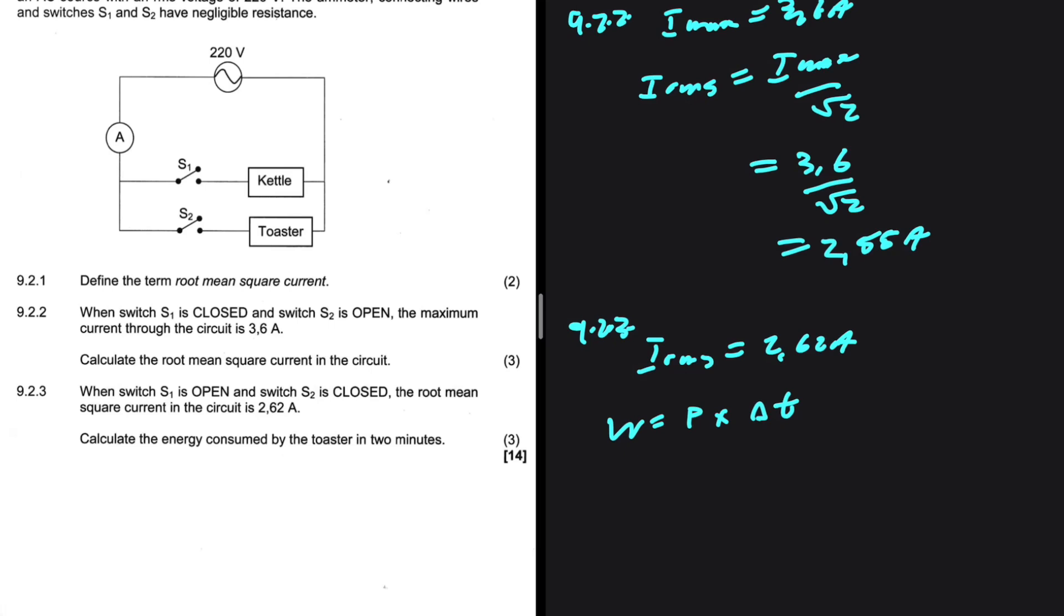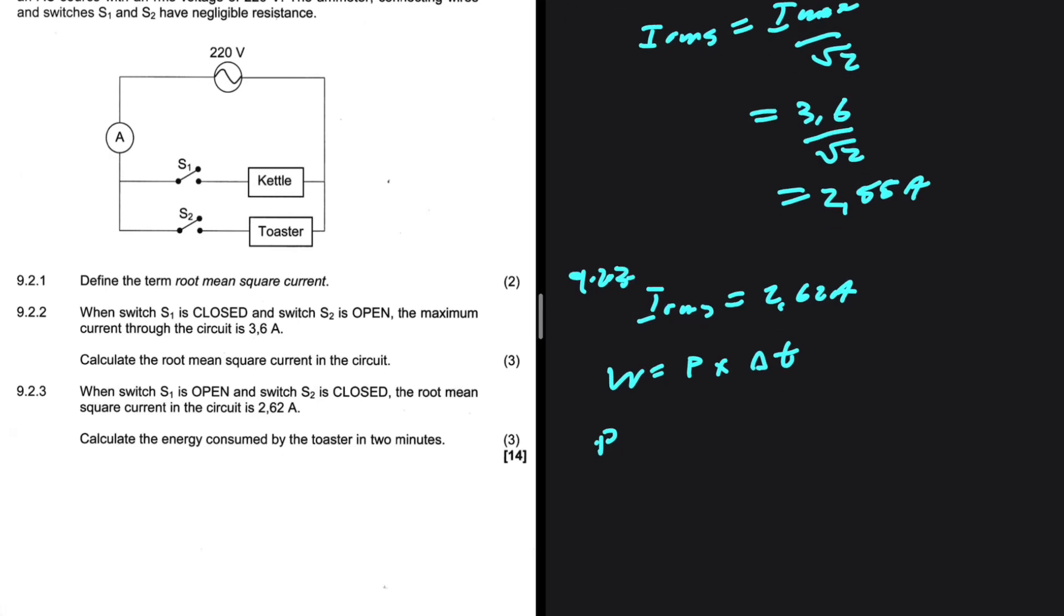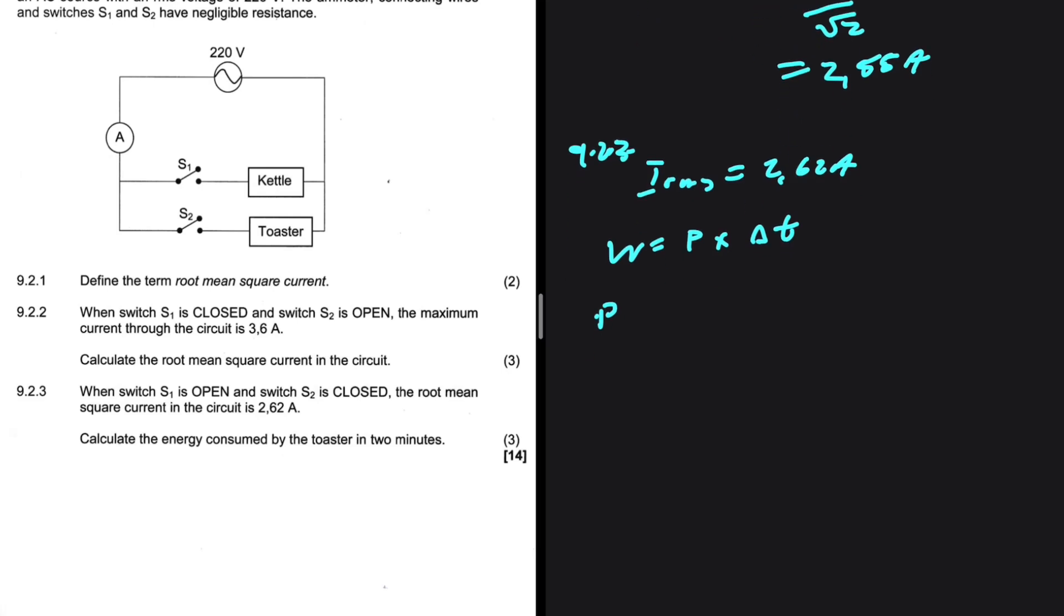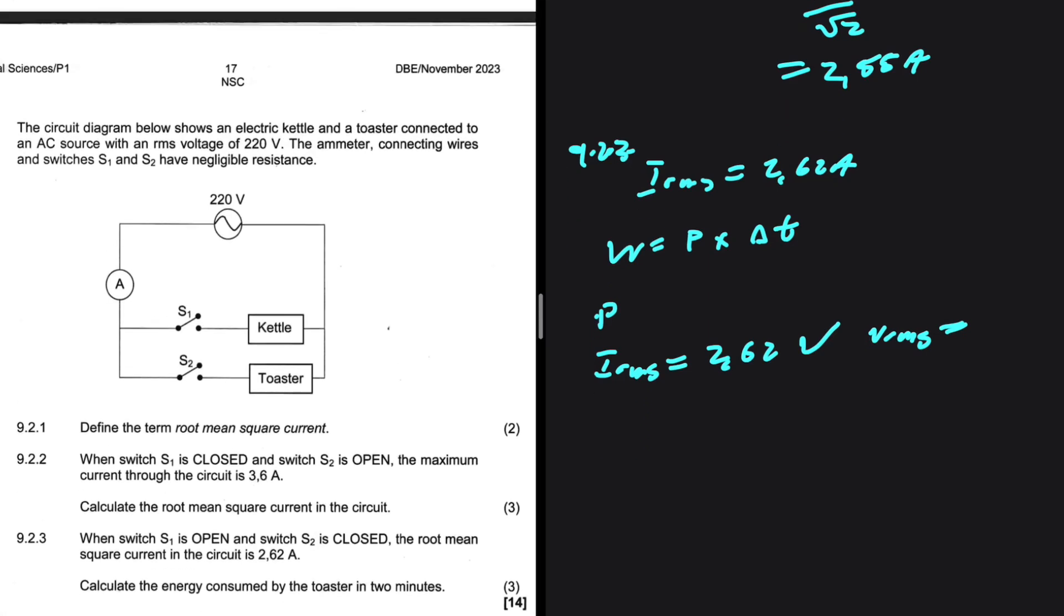So, the power can take different forms. We can have VI, V squared divided by R, I squared multiplied by R. So, let's decide on which formula we're going to use to calculate the power. Well, we have I. IRMS equals 2.62. So, now we need V or R in order to calculate the power. We have the VRMS. We are given the VRMS of the source. It is said to be 220.